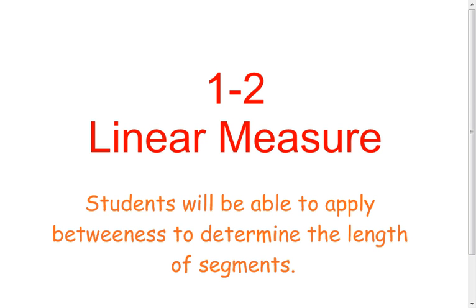All right, in this lesson we're going to talk about linear measure. If you actually want to measure something, it's got to be a finite length. In that first section we talked about lines which would go on forever, therefore those things would not be able to be measured because they keep going on forever.